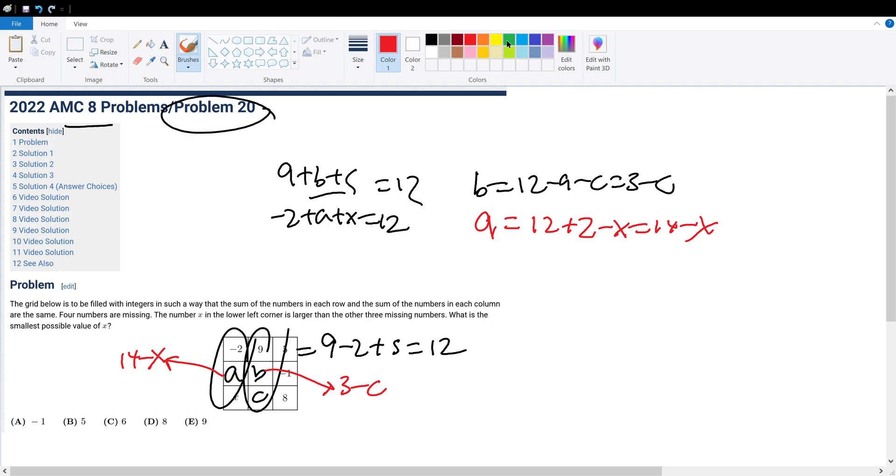Now what the question states is that X in the lower left corner is larger than the three other remaining numbers. So this number has to be greater than this number, this number, and this number. So what that means is that X has to be larger than 14 minus X, the number in this square.